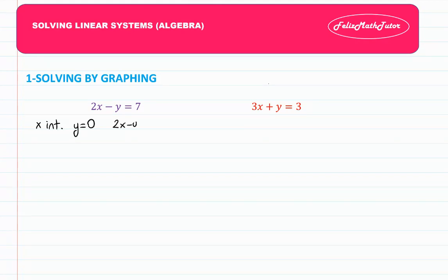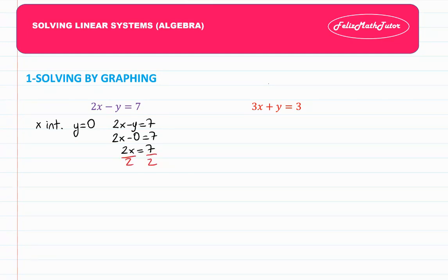For 2x minus y equals 7, we put y equals 0: 2x minus 0 equals 7, so 2x equals 7. Dividing both sides by 2, I get x equals 3.5. This is my x-intercept.